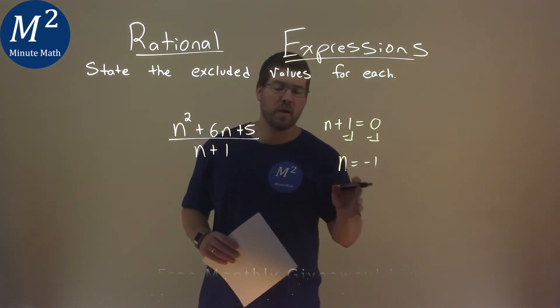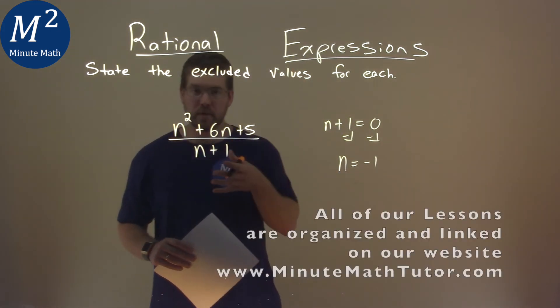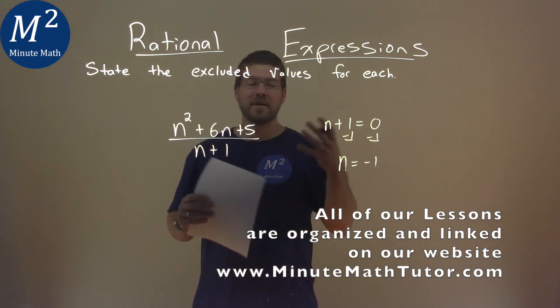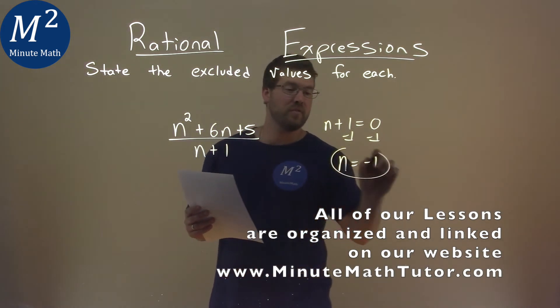So that means when we plug negative 1 in for n, our denominator will equal 0, and that's going to cause, really, well, n equals negative 1 to be that excluded value.